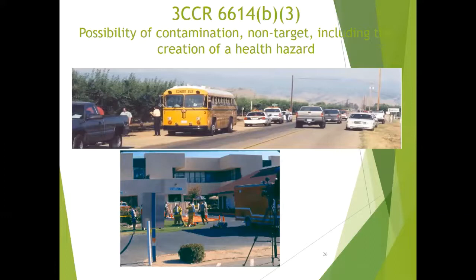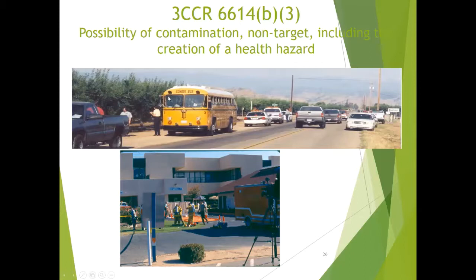Section B3 covers the possibility of contamination to non-target areas, including the creation of a health hazard. In this particular instance — a little older — there's a school bus on the right side of the picture, next to a vineyard. An application was being made for dormant mealybug to the vineyard, and the applicator accidentally drifted onto the school bus. There was a bus driver and the bus was full of school children. The bus driver and children all experienced symptoms and ended up going to the hospital.